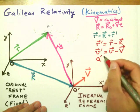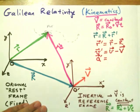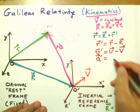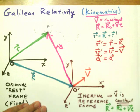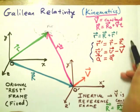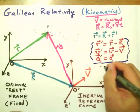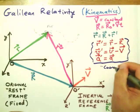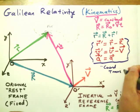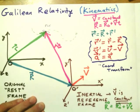Taking a second derivative — since the velocity of the frame is constant, that second derivative contributes no extra term — so A-prime is equal to A. These are the coordinate transform relationships between the primed and unprimed coordinate systems.